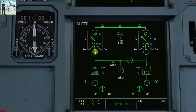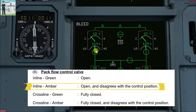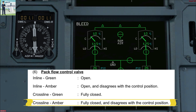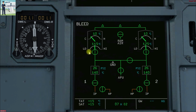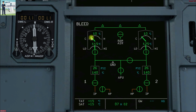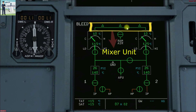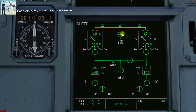On the ECAM bleed page, the pack flow control valve position is shown: in-line in green if the valve is open, in-line in amber if the valve position disagrees with the control position and the valve is open, and cross-line in amber if the valve is fully closed and position disagrees with the control position. There is also pack flow indication from low to high, a temperature indication showing the compressor outlet temperature, the turbine bypass valve position, and the pack outlet temperature. The two pack outlets connect to a line indicating the mixer unit, with three triangles indicating the three zones. The position of the emergency ram air is also shown, with a direct connection to the mixer unit in an emergency.